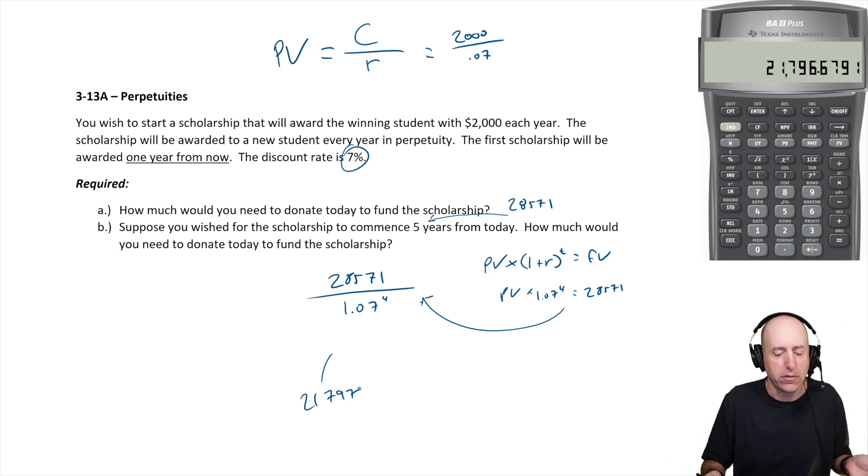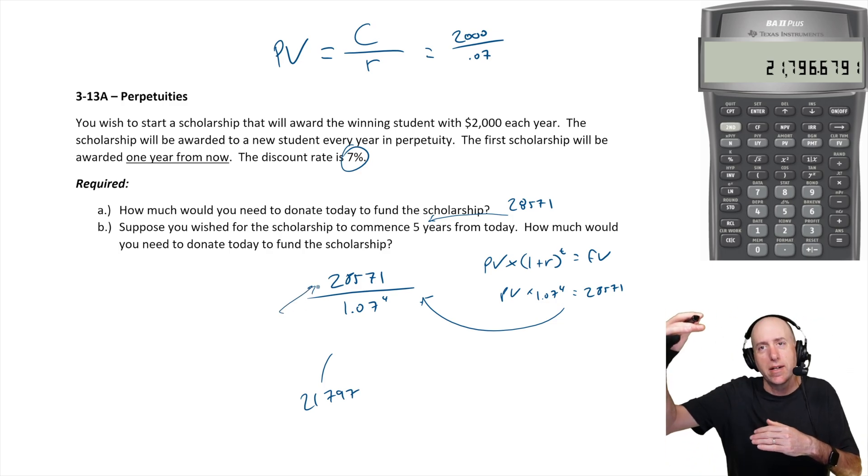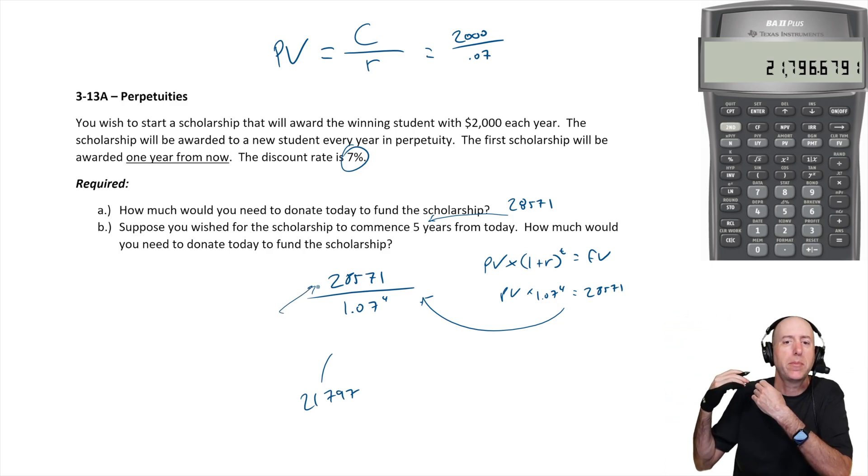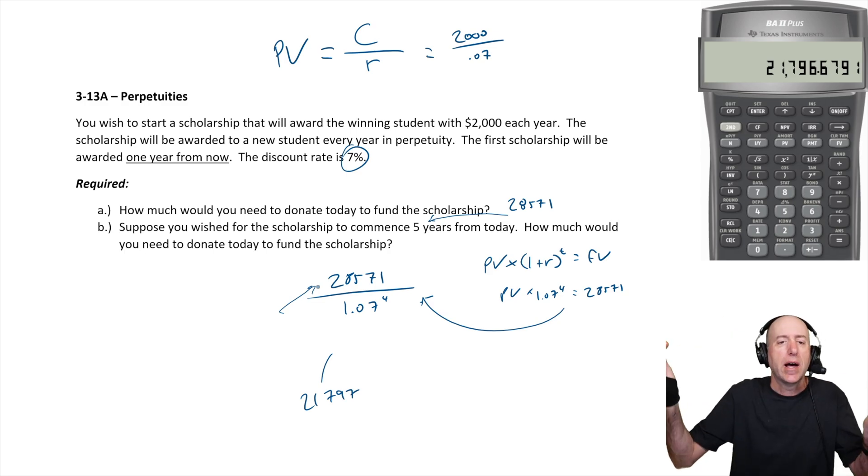So I need to put away 21,797 today. It's gonna grow in some investment account for four years. At the start of year five, I'll have 28,571 put away. It'll grow by two grand. We'll trim the two grand off the top, pay our first student, and do that in perpetuity. There we have it. We've solved 313a.